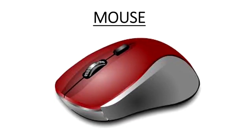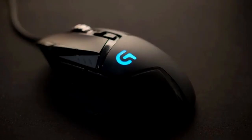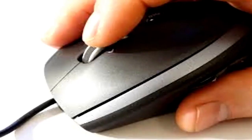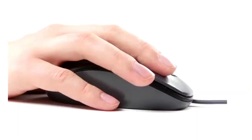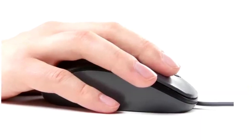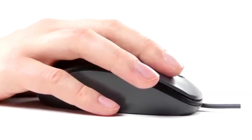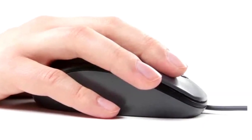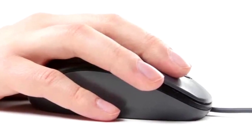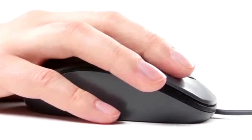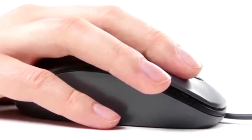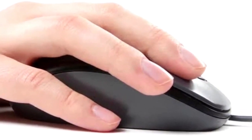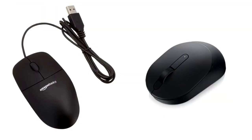Mouse. A mouse interacts with a computer through a process known as point and click. When a user moves the mouse, the pointer moves in a corresponding direction on the computer's monitor screen. A mouse can be wired or wireless.